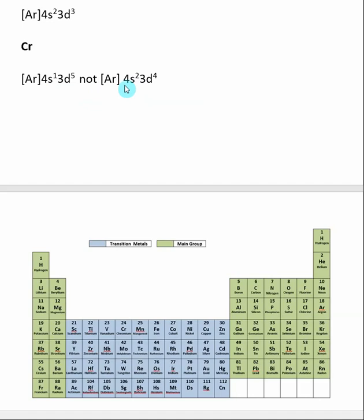And it wants to be a 3D5 so bad that it will actually steal a 4S electron. So without doing the change, you would expect it to be 4S2, 3D4. But to gain the stability of a half-filled subshell, an electron will jump from the 4S subshell into the 3D subshell, making it 4S1, 3D5.